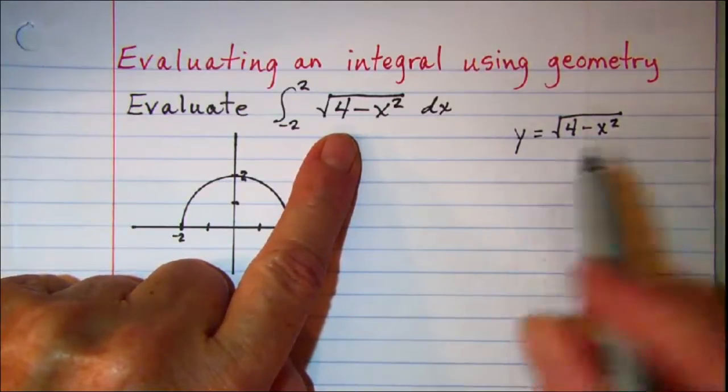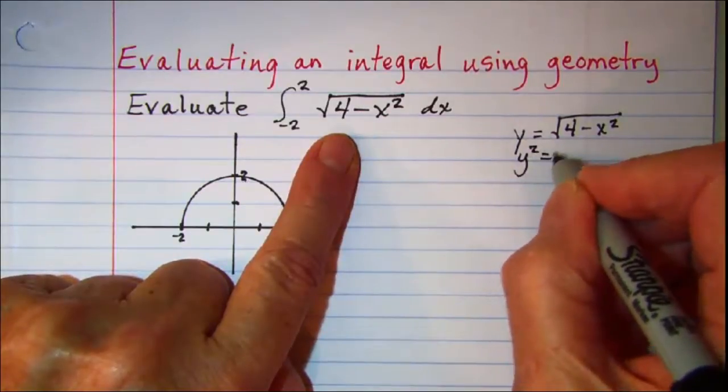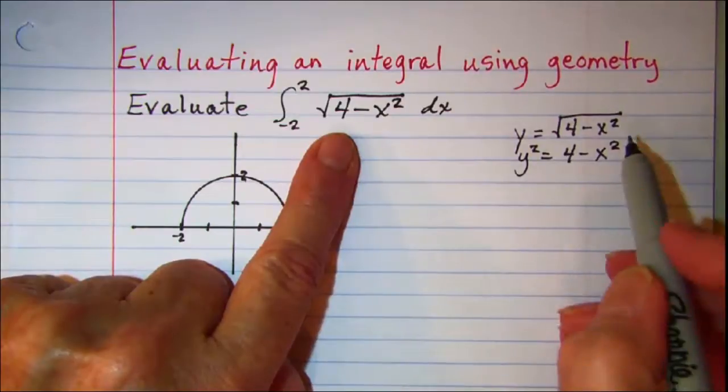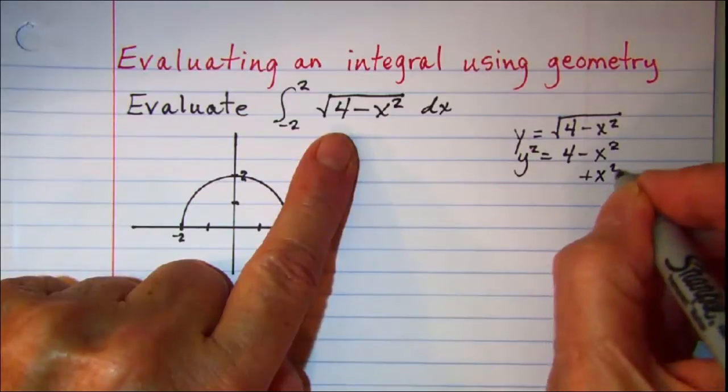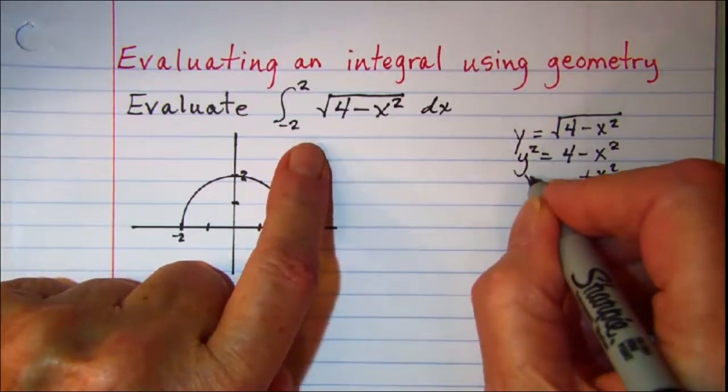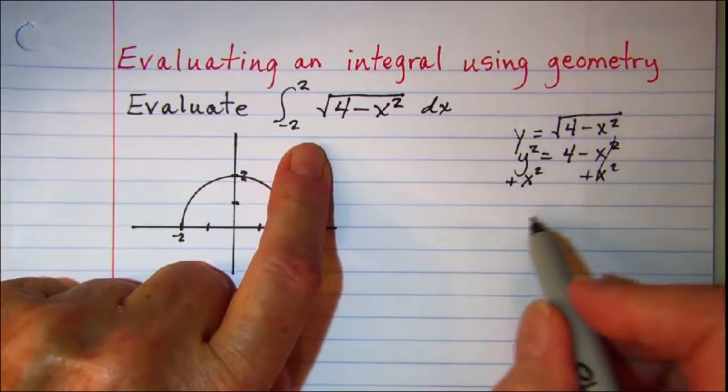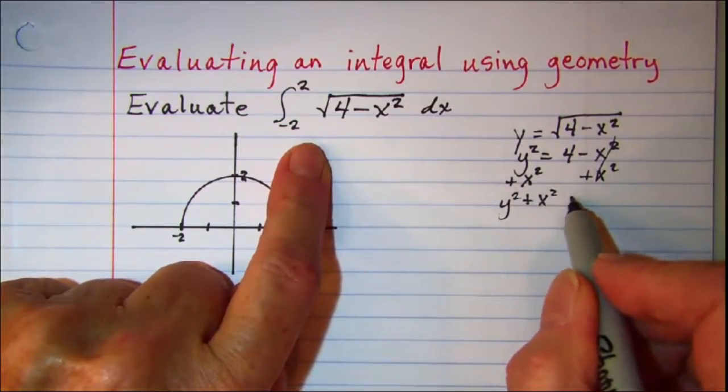Let's first of all square both sides so we have y squared is equal to 4 minus x squared, and then if I move my x squared to the left side we'll add x squared to both sides. This will cancel and I have y squared plus x squared is equal to 4.